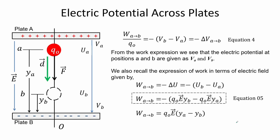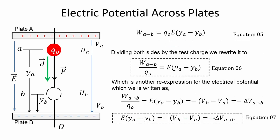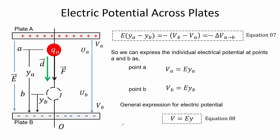From equation 4 we see that the electric potential at points A and B are given as V_A and V_B. We recall the expression of work as a function of the electric field E in equation 5. If we divide both sides of the work expression by the test charge, we write another expression for the electric potential as a function of electric field E and the distance Y, shown in equation 7. Here we can write the electric potential at points A and B, and the general expression is shown in equation 8.